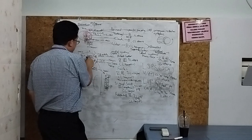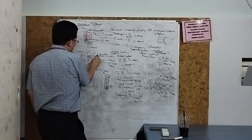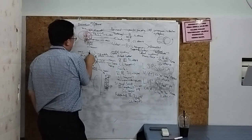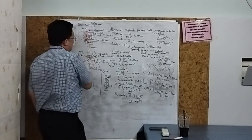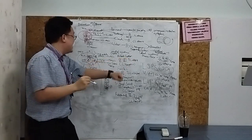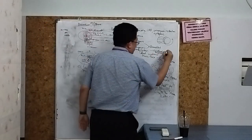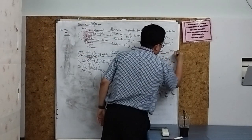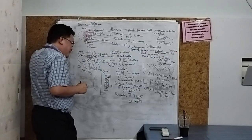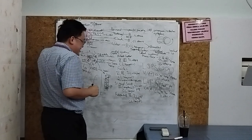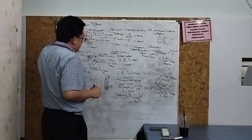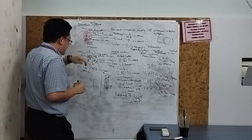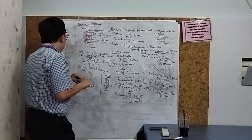Bilateral Raymond-Céstan syndrome means the whole pons is affected — cranial nerves 5, 6, 7, and 8 on both sides — and you are left with only the third nerve. This is your lock-in syndrome.